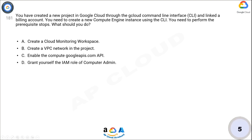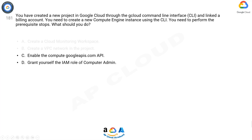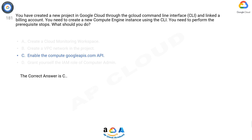The correct answer is C. Always grant access to APIs first in order to use GCP services. Before you create a Compute Engine instance, you must first enable the API.